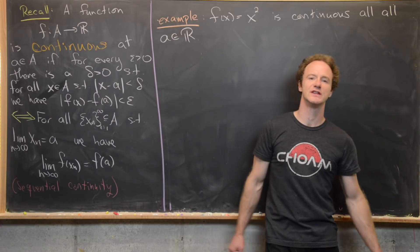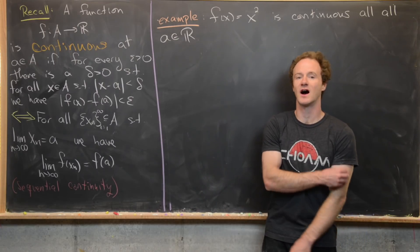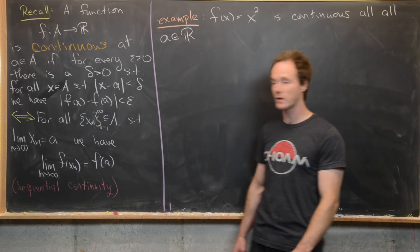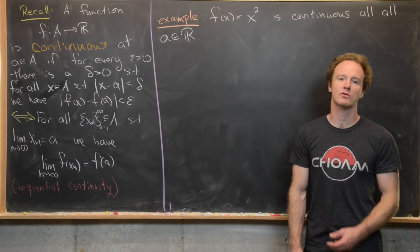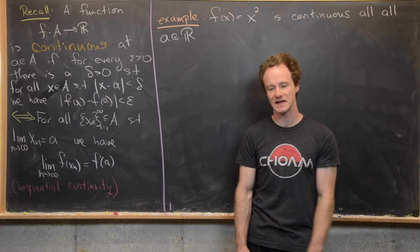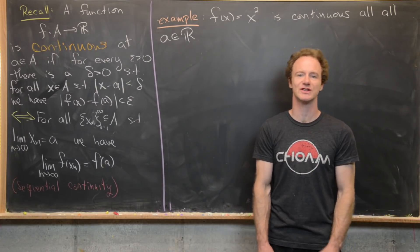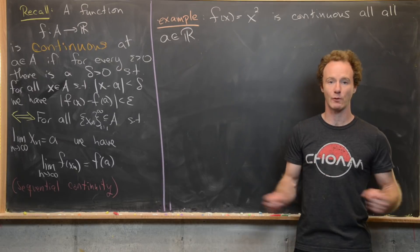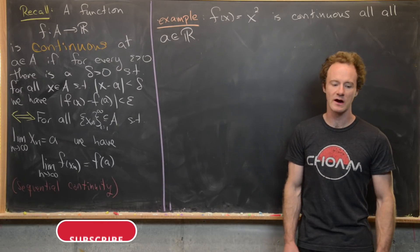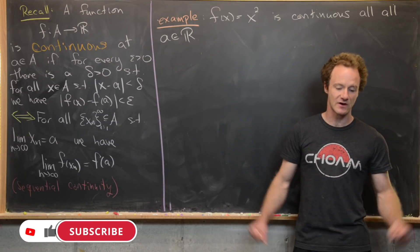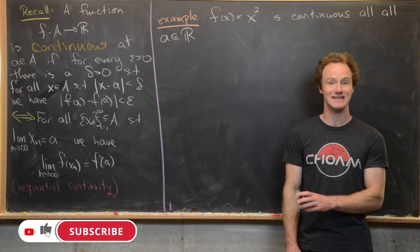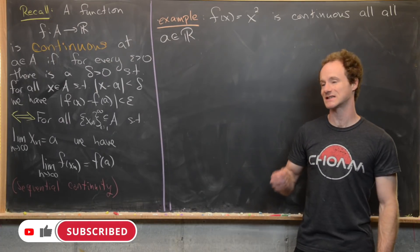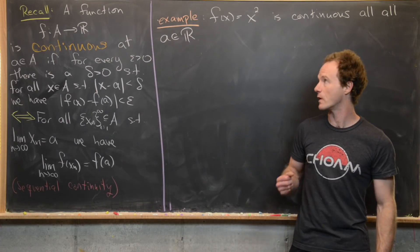In our last video we introduced the notion of continuity of a function at a point. I want to recall that quickly and then give an example of a function that is continuous everywhere and prove that it is continuous everywhere, and a function that is discontinuous everywhere and prove that it is discontinuous everywhere.